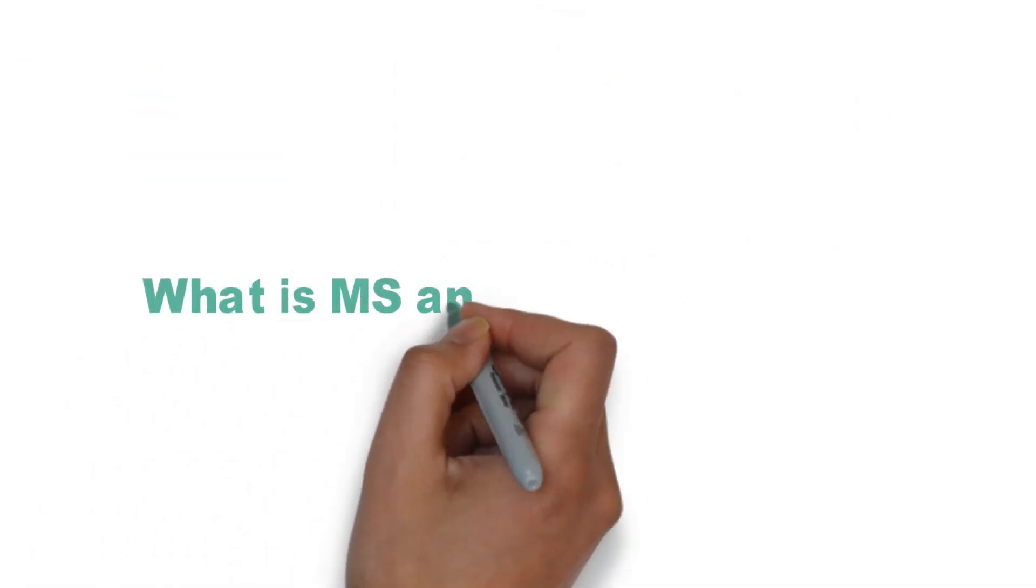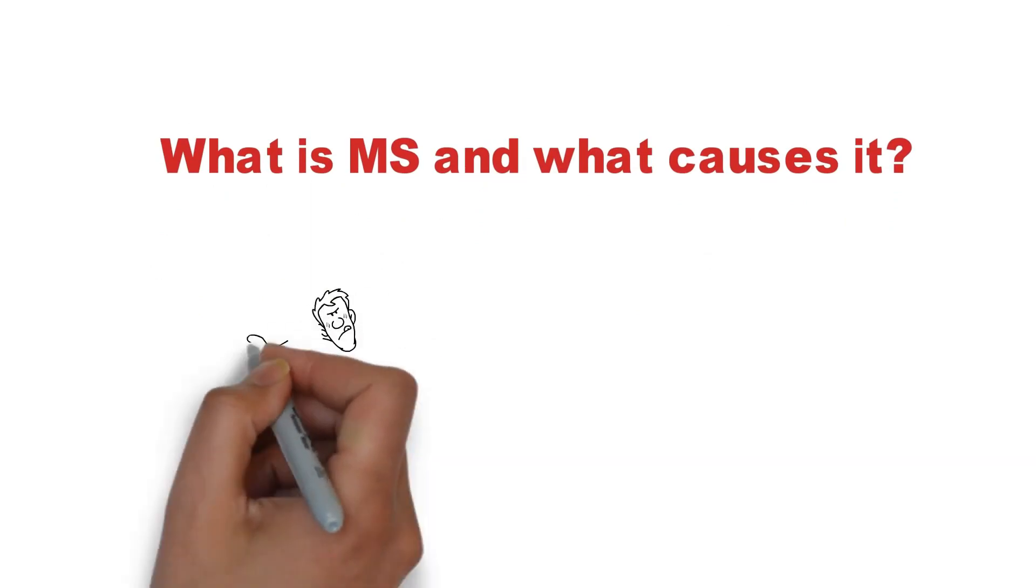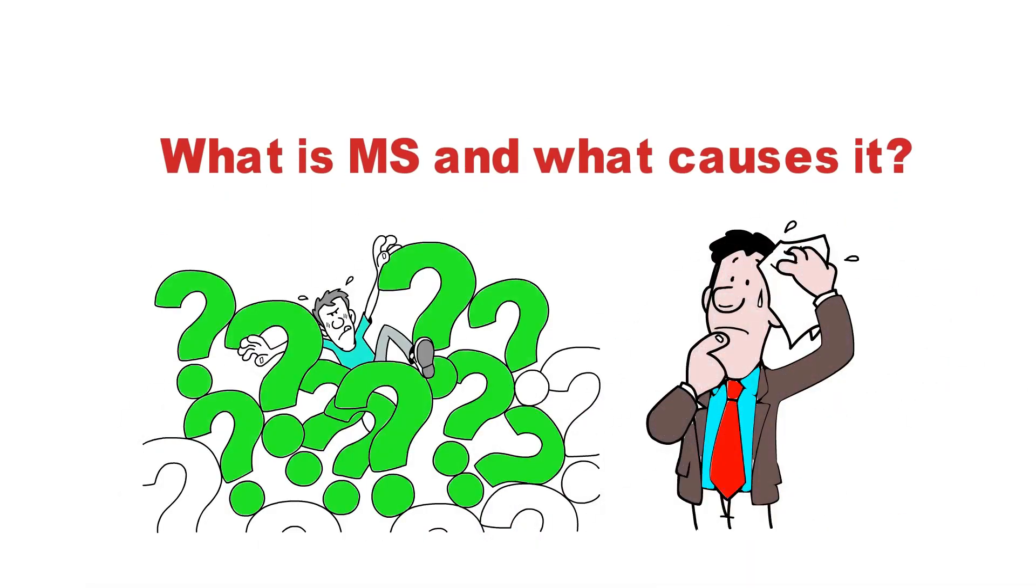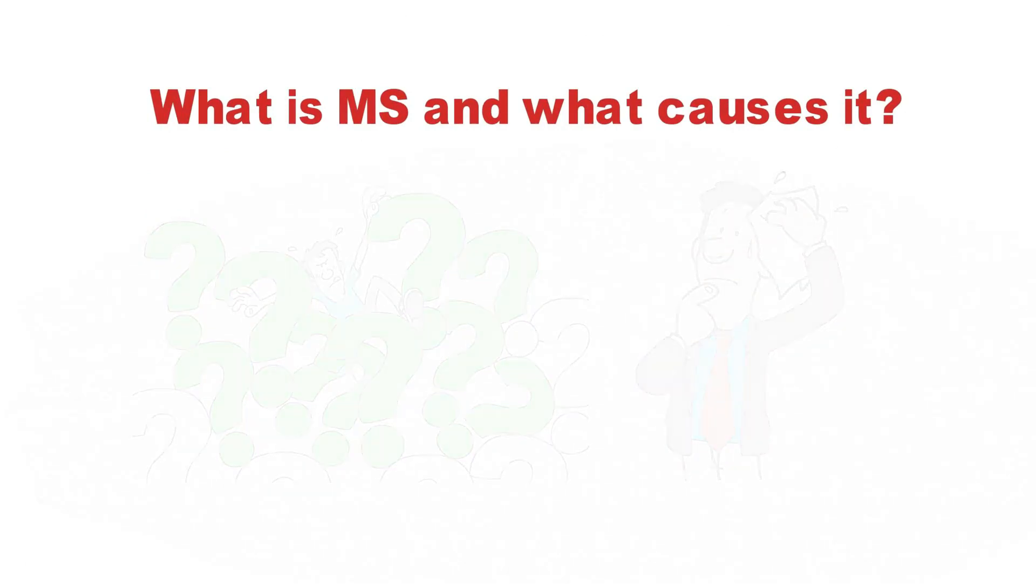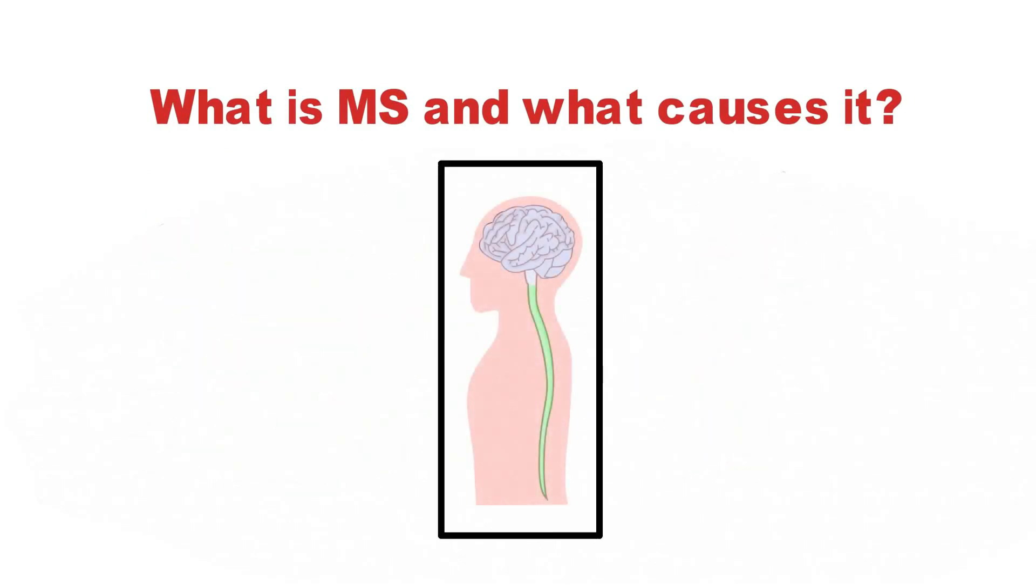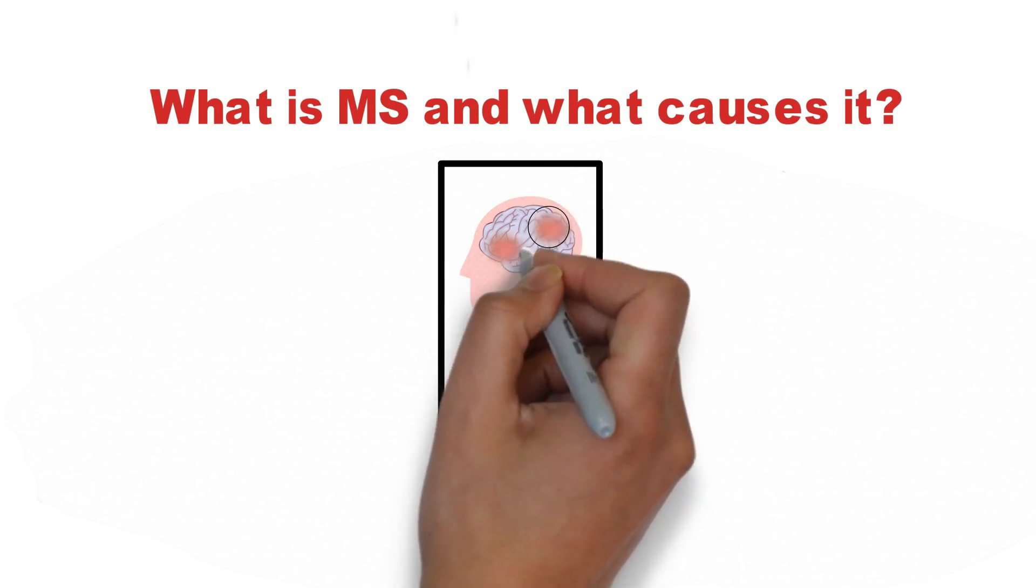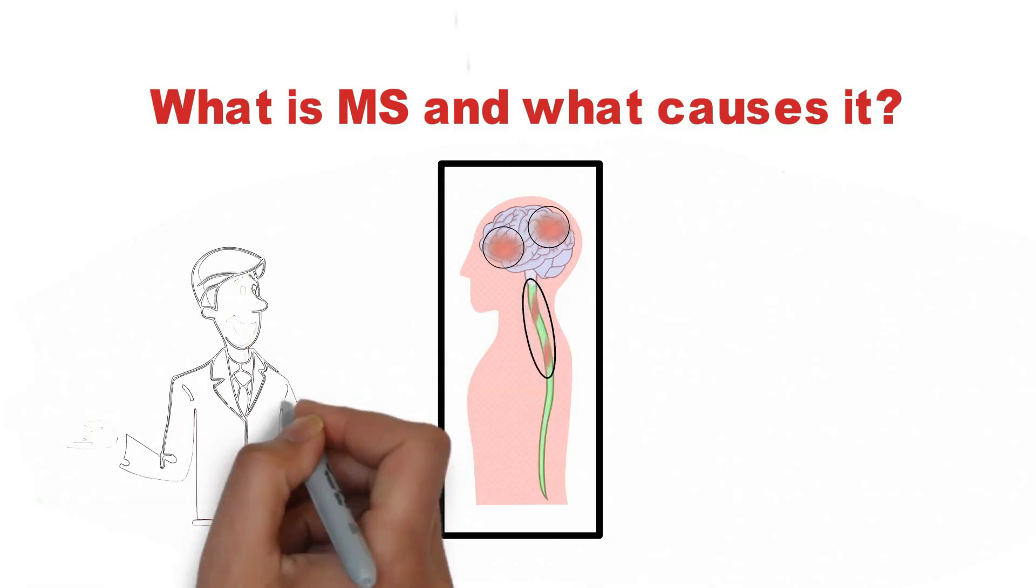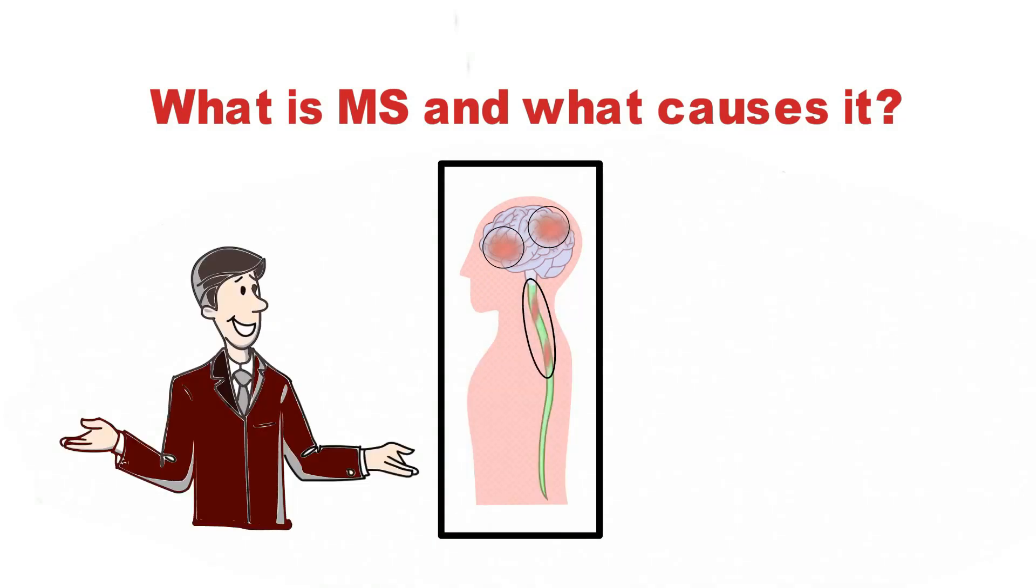What is MS and what causes it? So, what exactly is multiple sclerosis and who is most likely to get it? Let's take a closer look. MS occurs because of inflammation in parts of your brain and or spinal cord. This causes damage to the area and results in the symptoms experienced. We will talk about the symptoms later in the video.